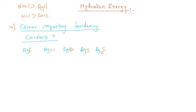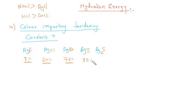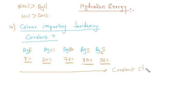In silver fluoride, the covalent character is very low — around 8 to 10%. Different reference books may give slightly different data. In AgCl the covalent character is about 20%, in AgBr it is 76%, in AgI it is 85%, and in Ag₂S it is 96%. Moving rightward, the covalent character keeps increasing, so the color should also become more and more intense.